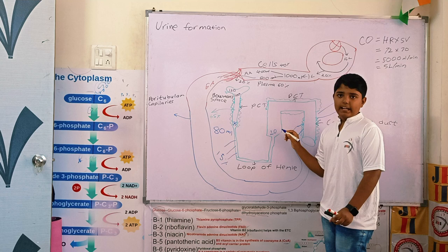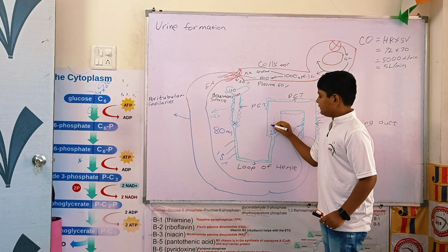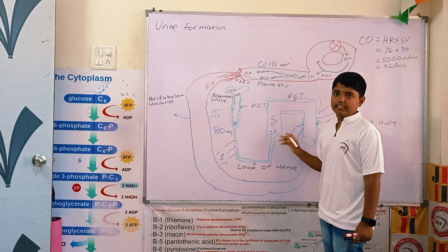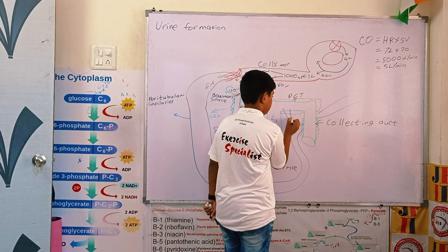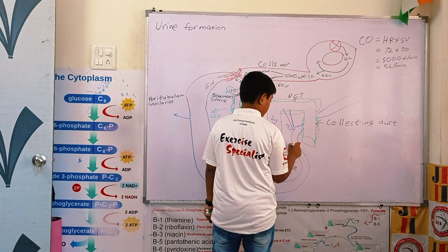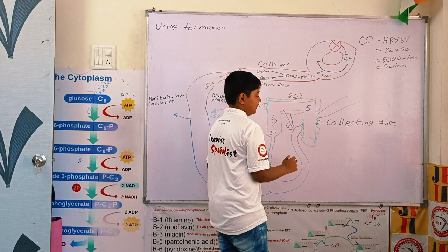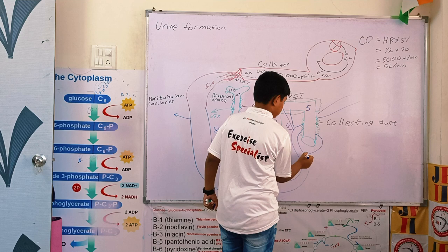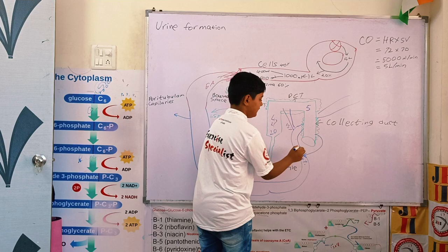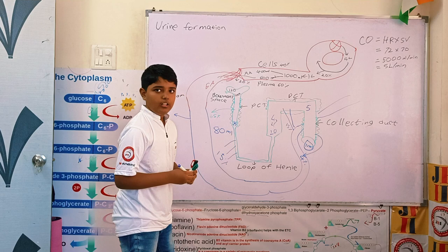This thick part is called the thick ascending limb of the loop of Henle. In the thick ascending limb, water cannot get out because the walls are very thick. But in the DCT, 15% is given out again to the capillaries — only 5 ml remains. And in the collecting duct, due to aldosterone, the collecting duct gives out 4%. So only 1 ml or 1% remains, which is every drop of urine you produce.